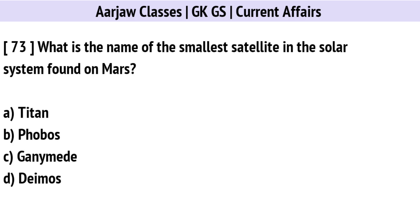What is the name of the smallest satellite in the solar system, found on Mars? Correct option is D: Deimos.